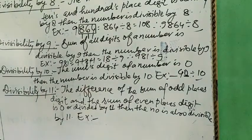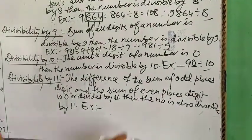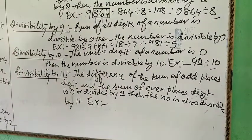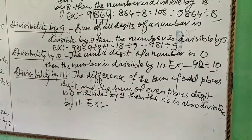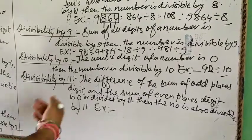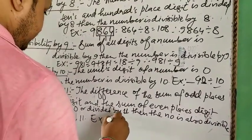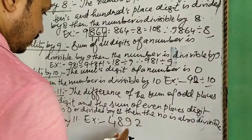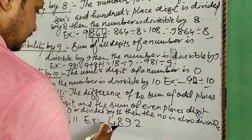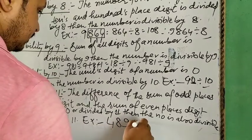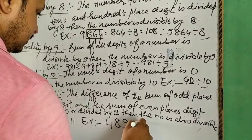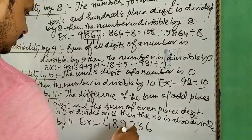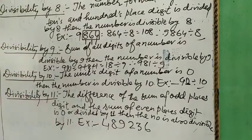The divisibility rule of 11: The sum of the odd place digits and the sum of the even place digits, the difference must be divided by 11 for the number to be divisible by 11. For example, 489236.